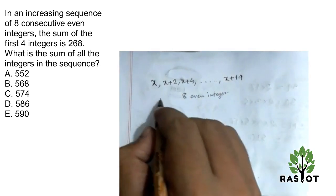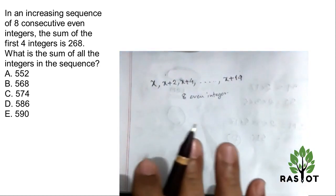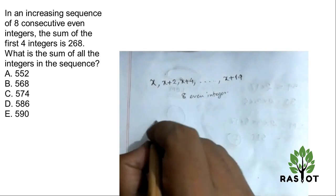Now we ask the question, the first 4, the summation is 268. Fine.